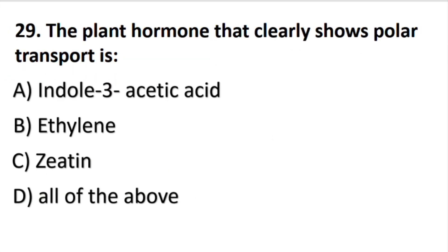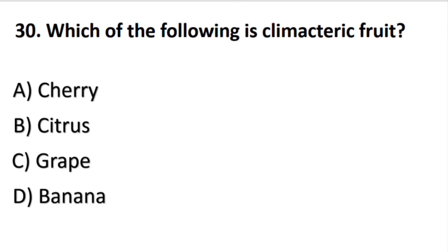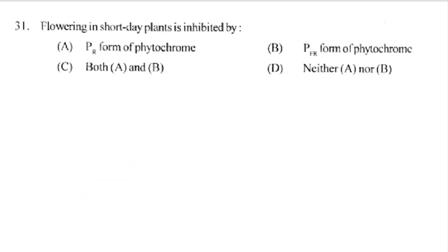The plant hormone that clearly shows polar transport is — the answer is A part: indole-3-acetic acid. Which of the following is a climacteric fruit? The answer is D part: banana. Flowering in short-day plants is inhibited by — the answer is B part: PFR form of phytochrome.